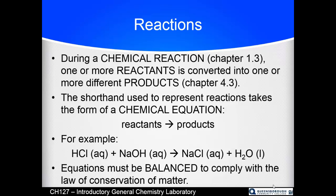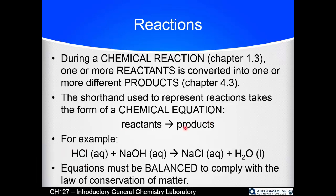The shorthand we use when talking about chemical reactions are chemical equations, where we have reactants on the left and products on the right, with an arrow going from left to right. Why left to right? Because that's the direction that English and German are written in, and that's the language of science, for better or for worse.